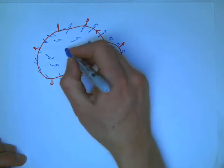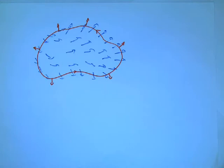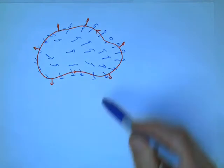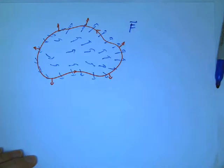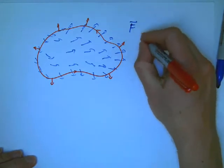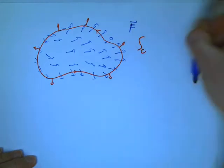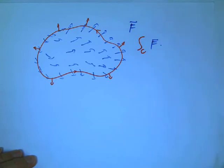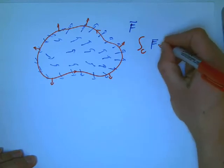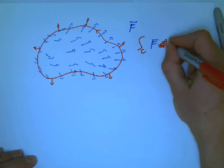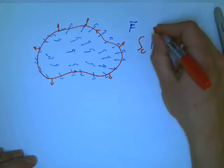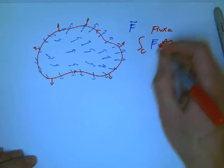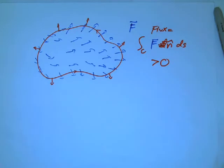It looks like there's kind of more outward flow than inward here. So it looks to me like the flux of this vector field F across this curve C, let me be fancy with my colors here, I guess that deserves to come from the curve. Dot N D S. That's the flux. Looks like it should be greater than zero there, just to fix ideas.